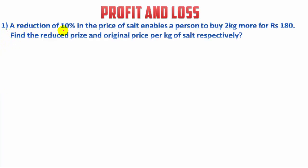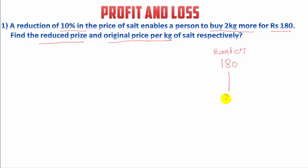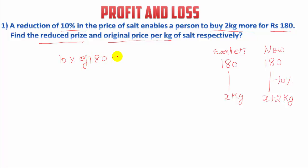First question: a reduction of 10% in the price of salt enables a person to buy 2 kg more for Rs.180. We have to find the reduced price and original price per kg of salt. The person buys X kg of salt for Rs.180, and after a 10% reduction, he gets X plus 2 kg for the same Rs.180. So 10% of 180 equals the cost of 2 kg.